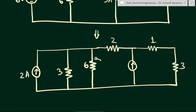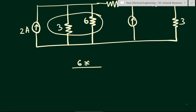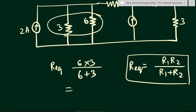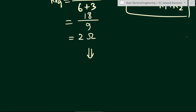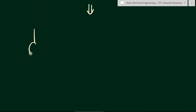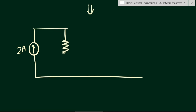We can see the 6-ohm and 3-ohm resistances are in parallel. The equivalent resistance formula is R_eq = (R1 × R2) / (R1 + R2) = (6 × 3) / (6 + 3) = 18/9 = 2 ohms. We replace these two parallel resistances with a single 2-ohm resistance. We redraw this circuit with the 2-ampere current source and a 2-ohm resistance in place of the 3-ohm and 6-ohm.